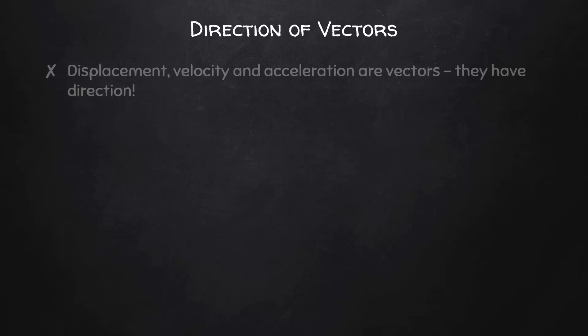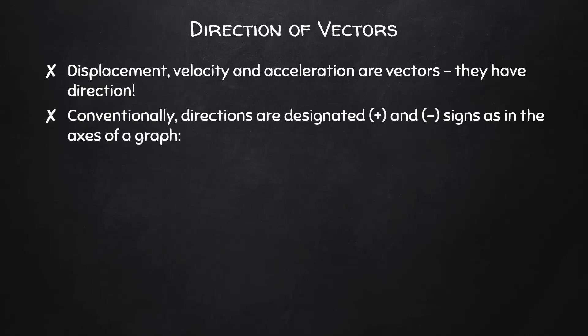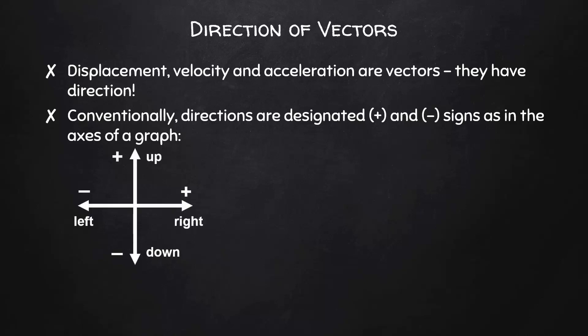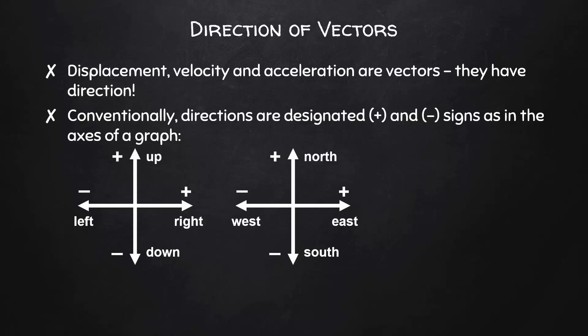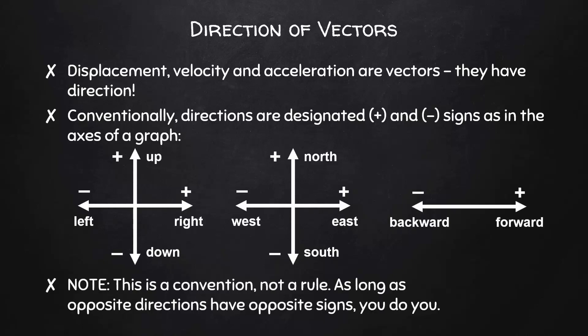Let's take a moment to talk about the direction of vectors. Displacement, velocity, and acceleration are all vectors — they have direction. Conventionally, directions are designated positive and negative signs as in the axes of a graph. It's important to note that this is just a convention, not a rule. As long as opposite directions have opposite signs, you do you.